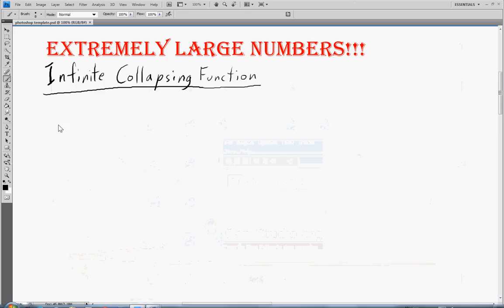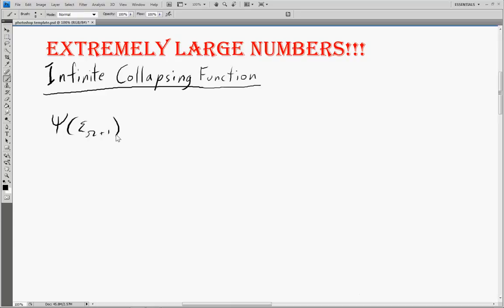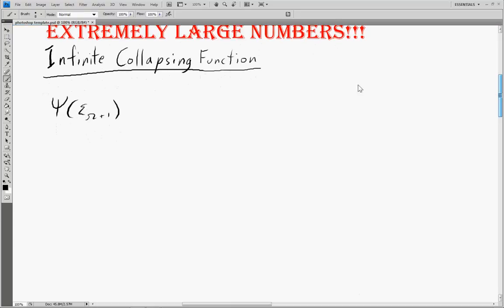Okay, so finally we're going to get past the Bachmann-Howard ordinal, which is psi epsilon sub omega plus 1. And to do that, we're going to have to denote a new psi function and call it psi 1 of some A.